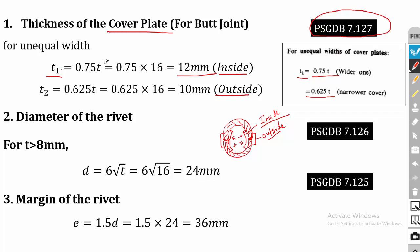So T1 = 12 mm (since T = 16 mm from the problem) and T2 = 10 mm. The second step is the diameter of the rivet. For thickness less than 8 mm we equate Fs with Fc; for T greater than 8 mm we directly use the empirical relation D = 6√T. Here T = 16 mm, so the diameter of the rivet is 24 mm.